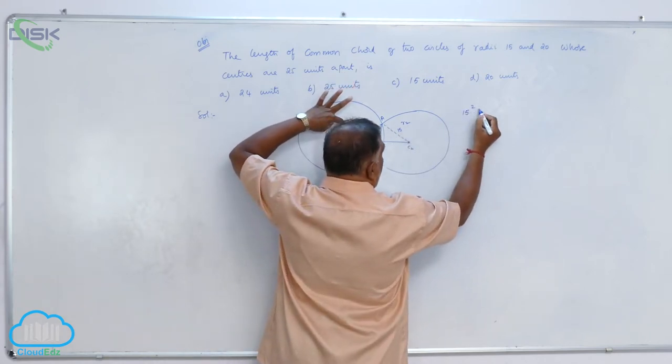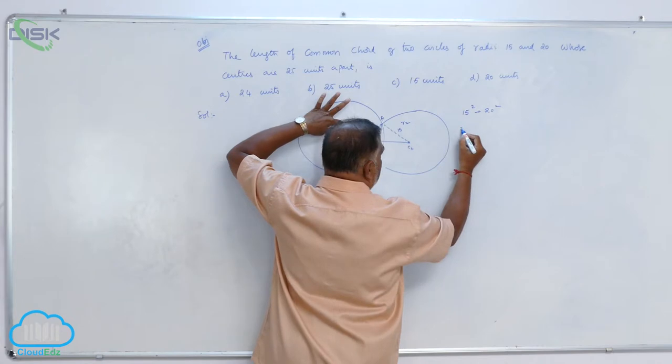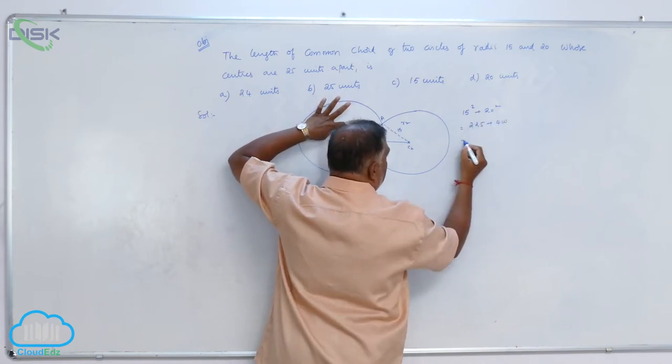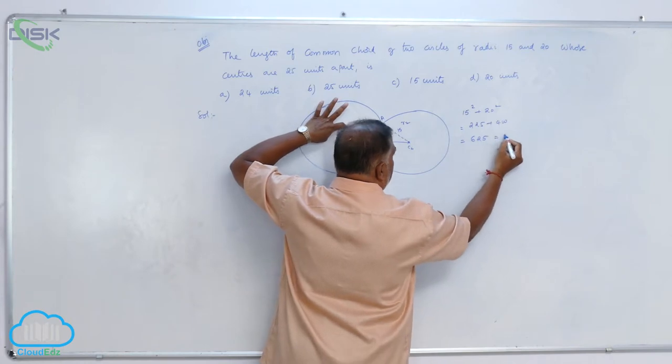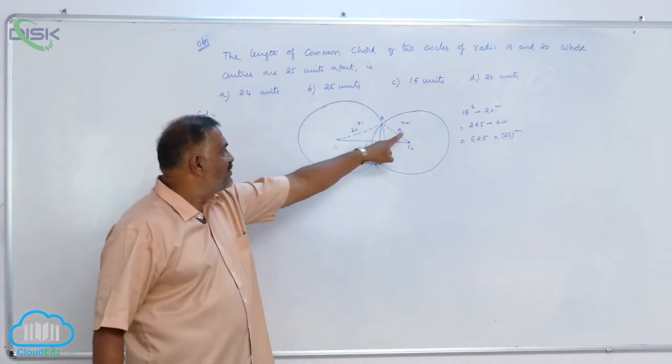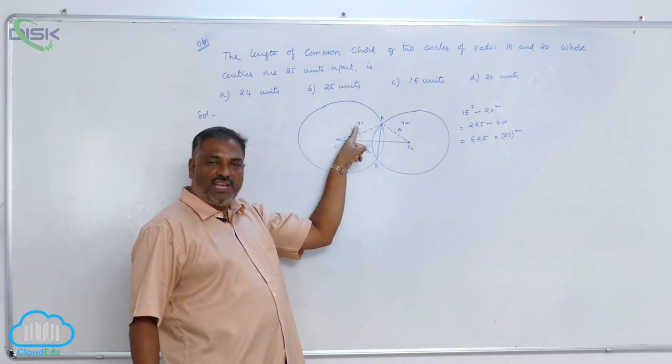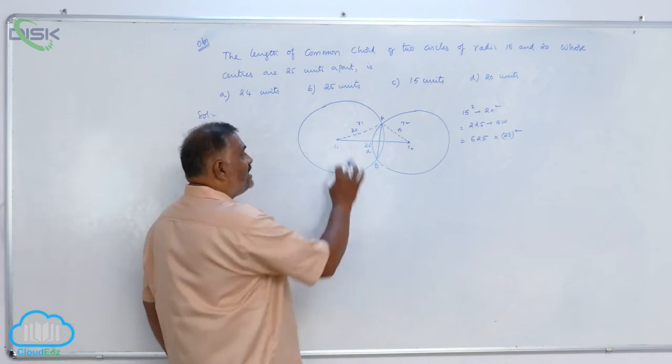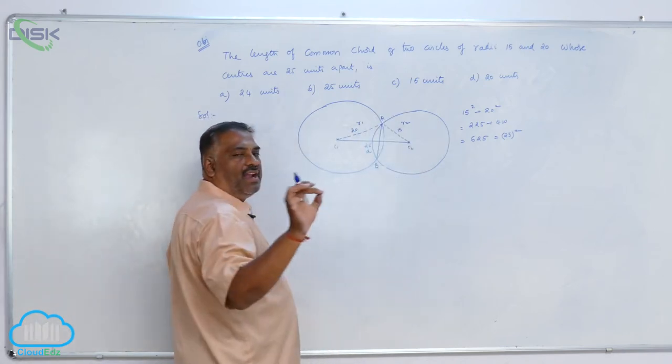15 square plus 20 square is equal to 225 plus 400, that is 625, that is 25 squared. That means sum of the squares of these two sides is equal to square of the third side. That means this given triangle is a right angled triangle.